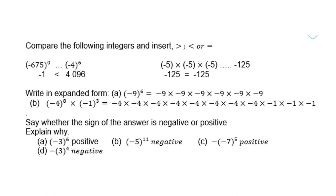Negative 5 times negative 5 times negative 5 is of course equal to negative 125. So the two are equal.